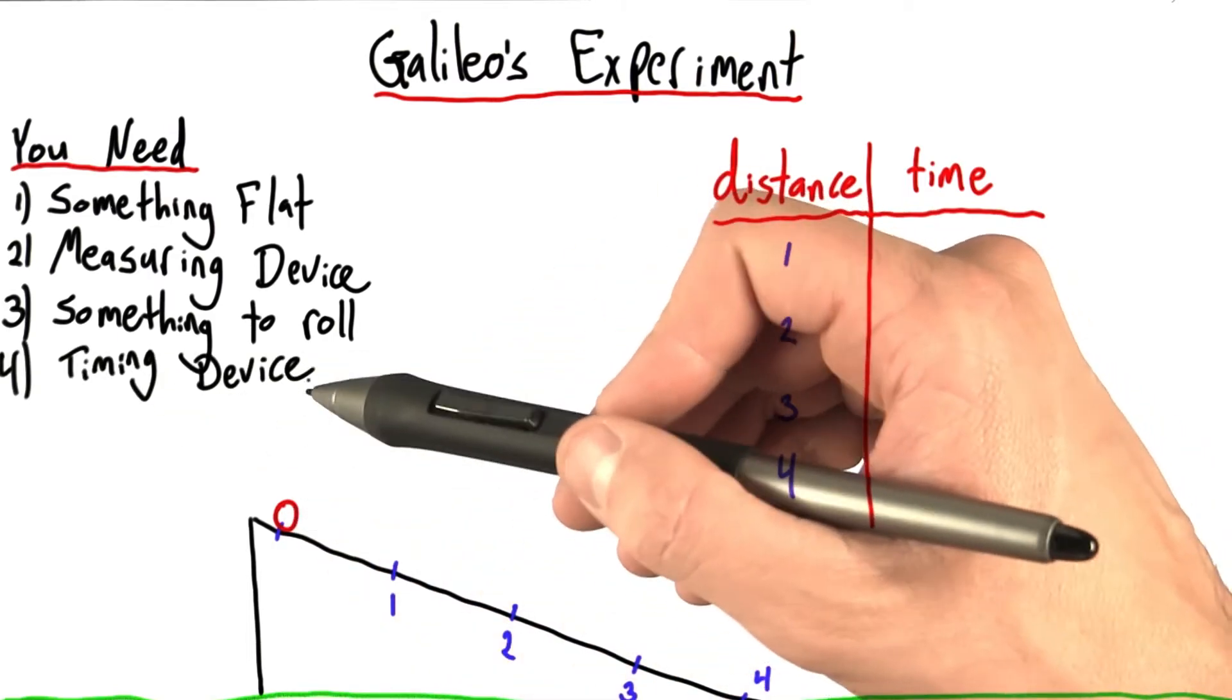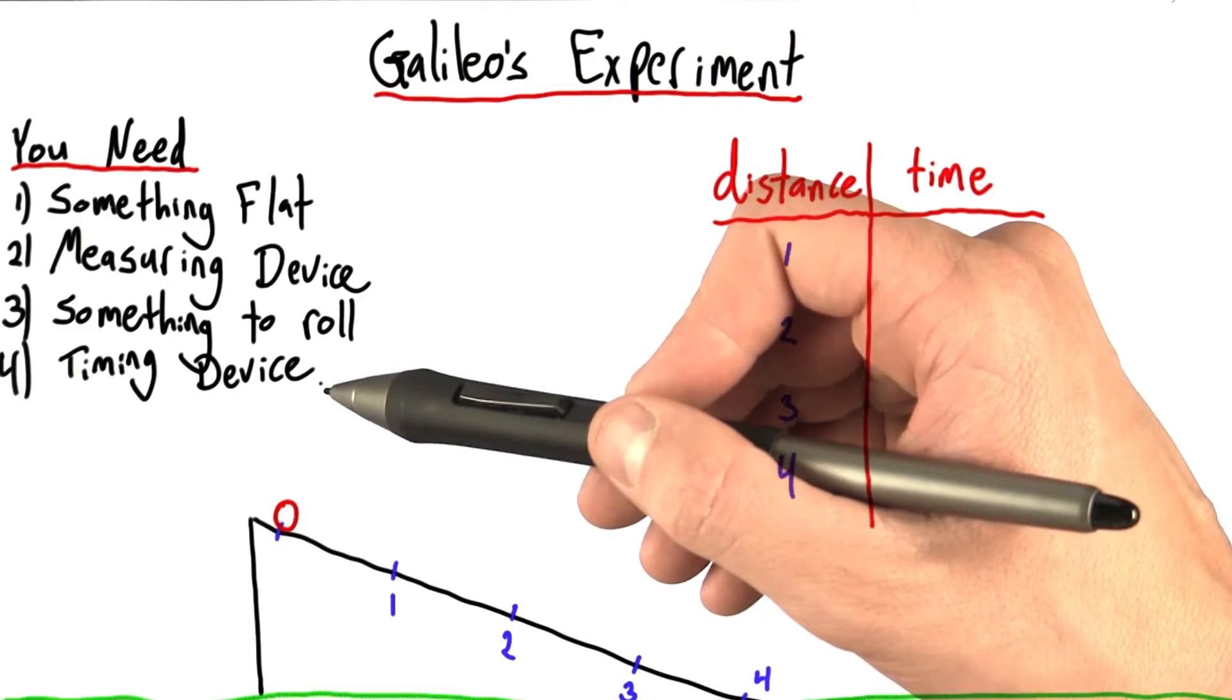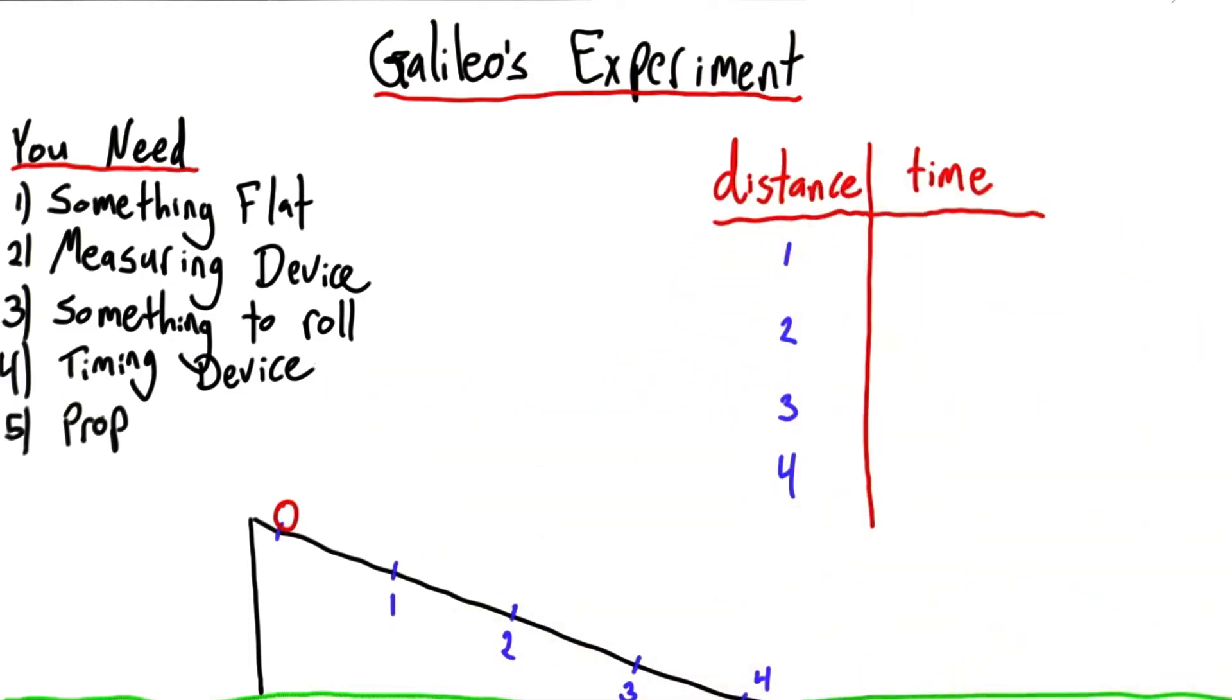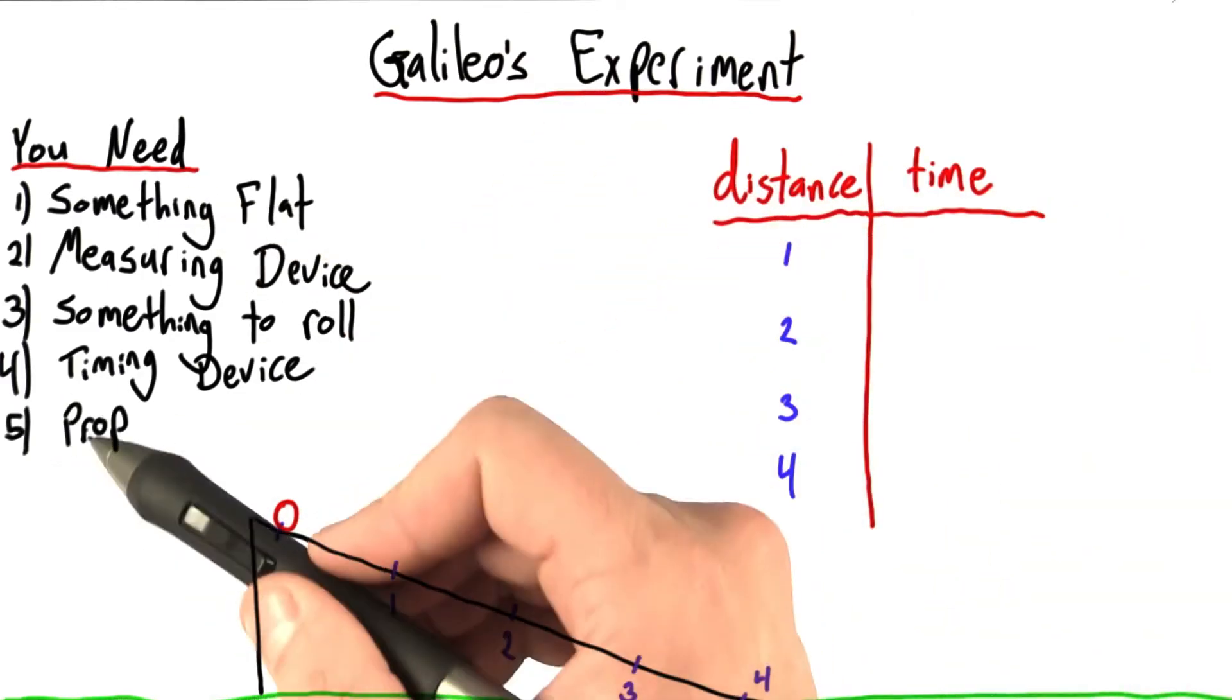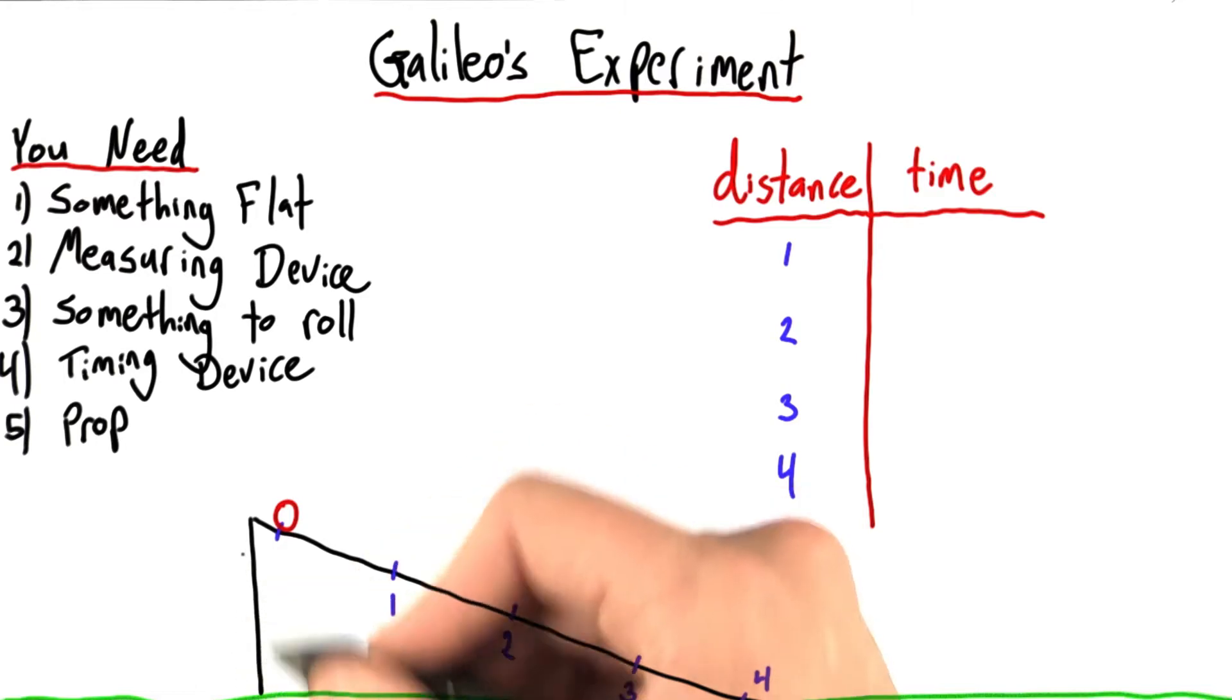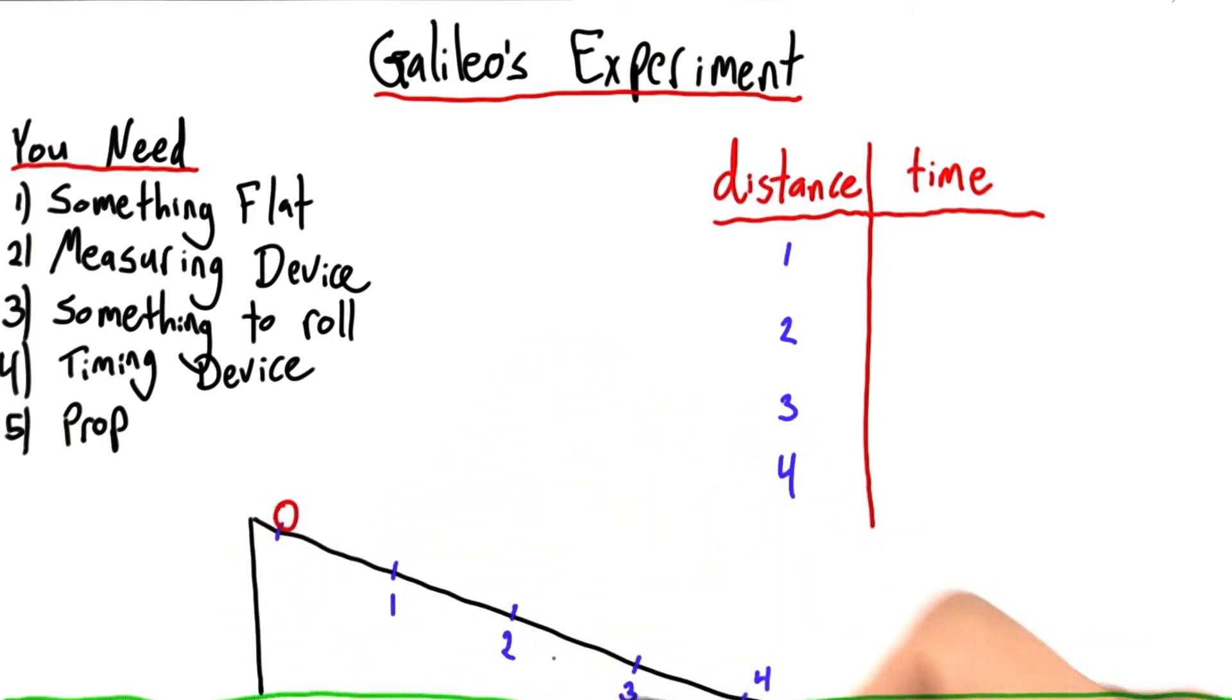And you'll need a timing device, something that measures in seconds. You can download these or find one on the internet very easily. Finally, you'll need something to prop your flat object up. This could just be a book that you stick underneath your flat object, or maybe a piece of wood. It doesn't matter. The purpose is to make this into an incline.